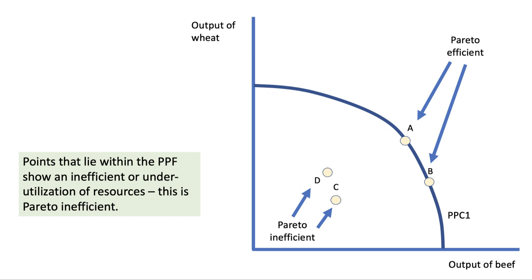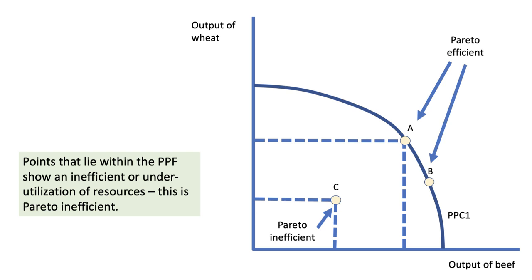In contrast, combinations including, for example, points C and D are well within the PPF, and that shows an inefficient or underutilisation of resources. That is Pareto inefficient.